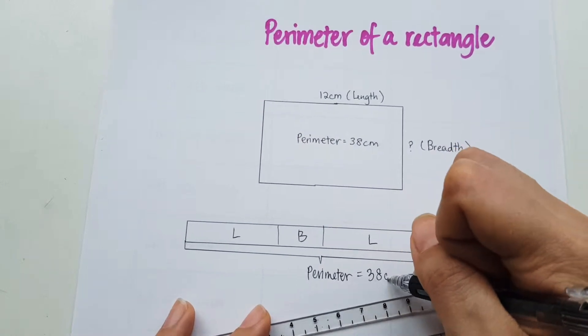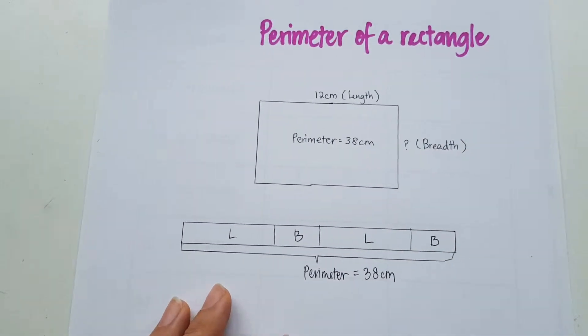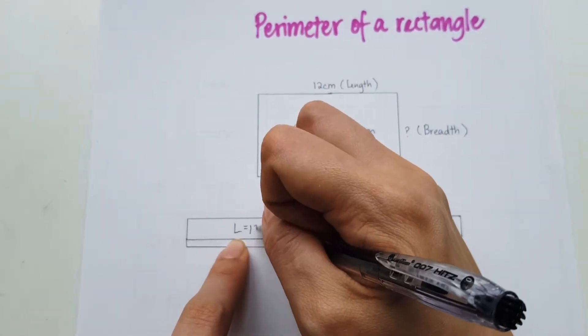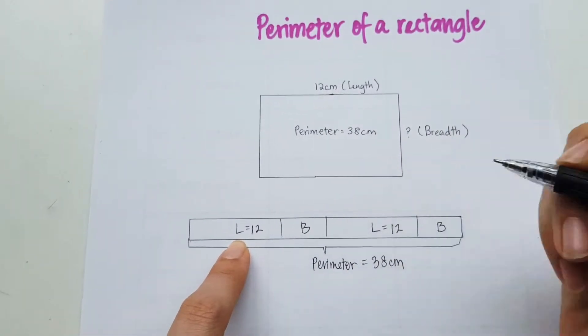Which is equal to 38 cm. Now given this information, I now know that the length is 12. So this is going to be 12. And this is also going to be 12.